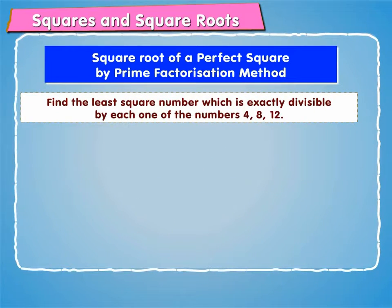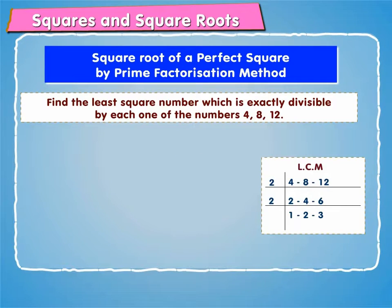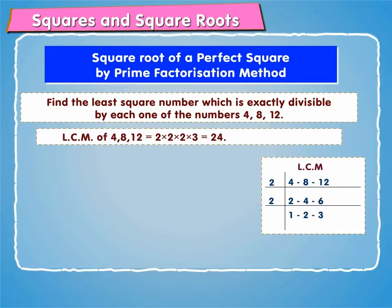Now, let us find the least square number which is exactly divisible by each one of the numbers 4, 8, and 12. The least number divisible by each one of the given numbers 4, 8, and 12 is their LCM. We find the LCM as shown on screen. The LCM of 4, 8, and 12 is equal to 2 × 2 × 2 × 3, which is equal to 24.